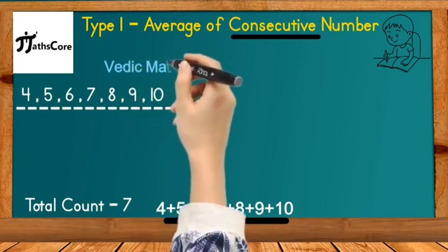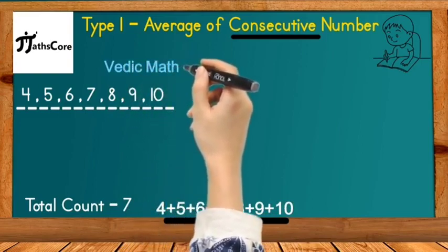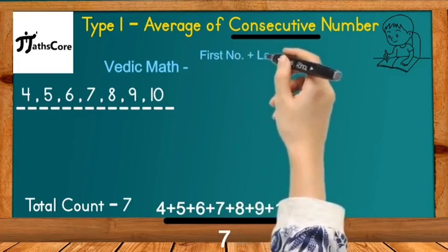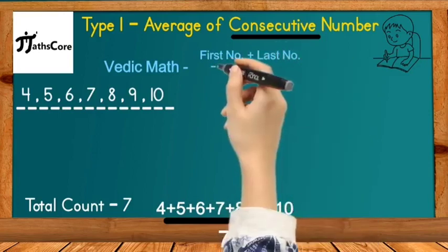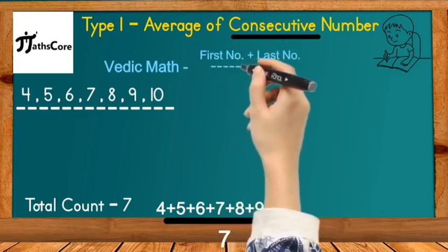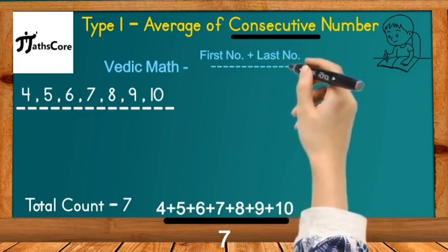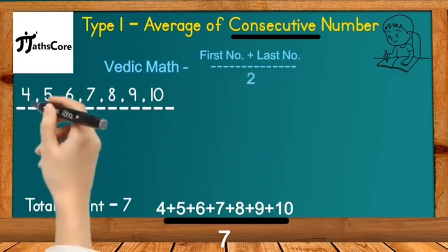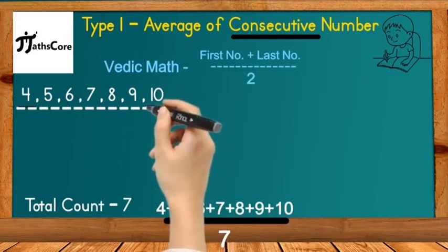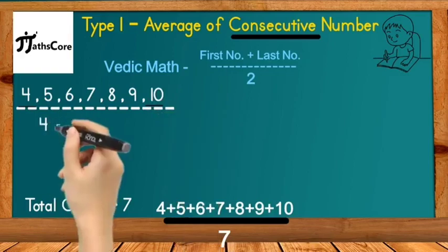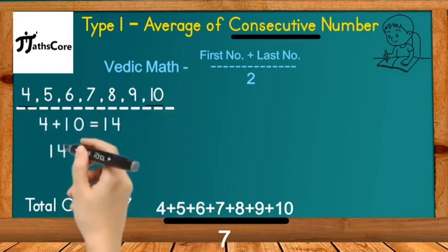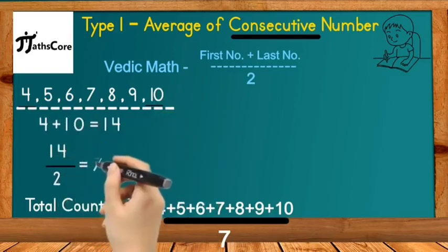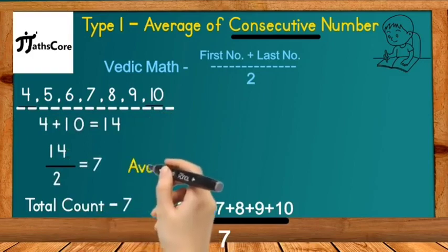But by using the Vedic math technique, you can find out the average of all these numbers within a few seconds. For that, you need to add the first and last number together and divide by 2. First number is 4 and last number is 10. 4 plus 10 is equal to 14, and 14 divided by 2 is equal to 7, which is the average of all these numbers.